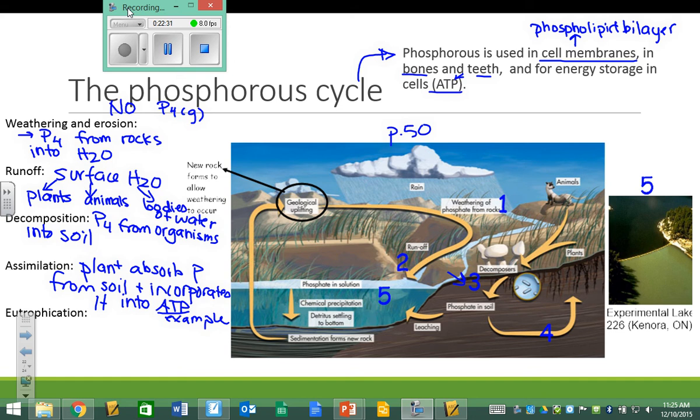Now, in the phosphorus cycle, I put the word eutrophication again, and I don't have anything new to say about eutrophication, except to remind you that fertilizer is made up generally of nitrogen, phosphorus, and potassium. So, if I have excess fertilizer, not only do I have excess nitrogen, but I very probably have excess phosphorus as well.